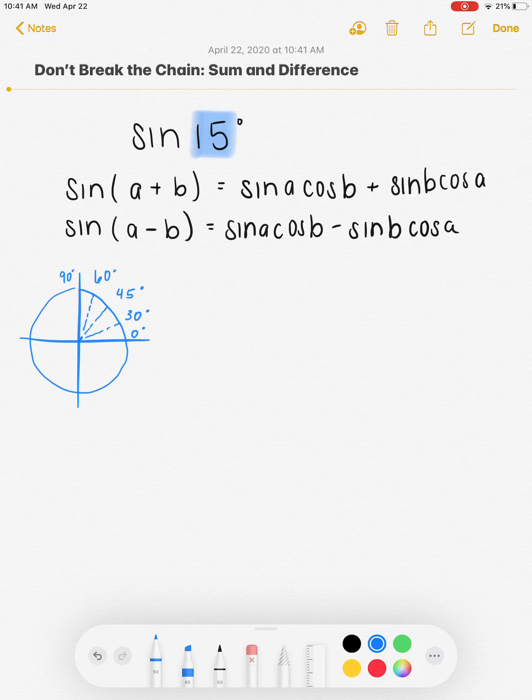So right off the bat, I notice I have two different options. I'm going to obviously subtract because all of my numbers are bigger than 15. But I could use 60 and 45 because if I do 60 minus 45, I get 15. Or I could do 45 minus 30 and get 15. So it doesn't matter which one I choose. I'm going to use 45 and 30.